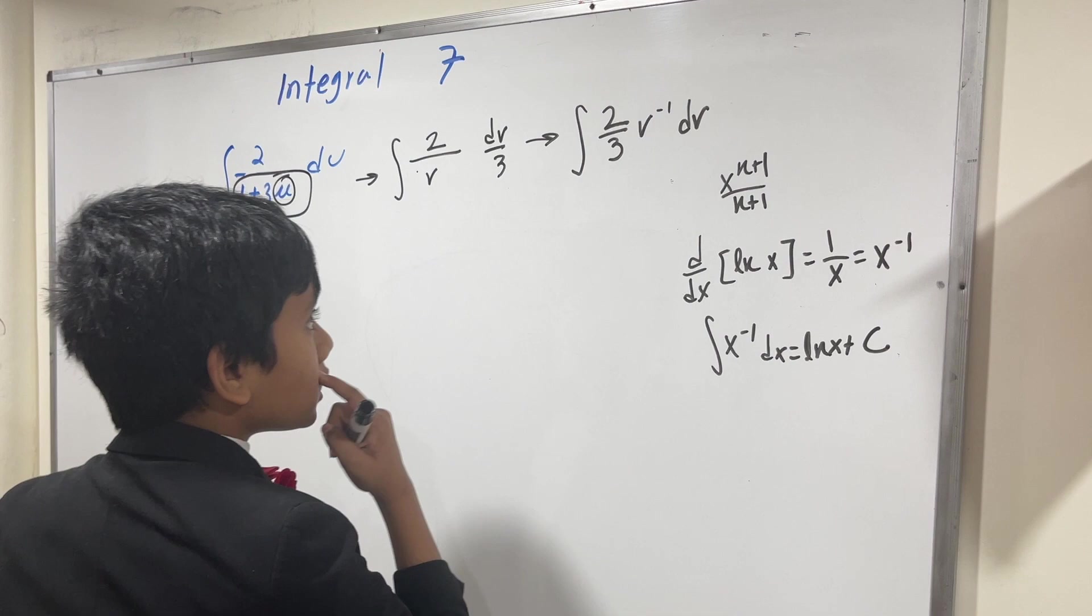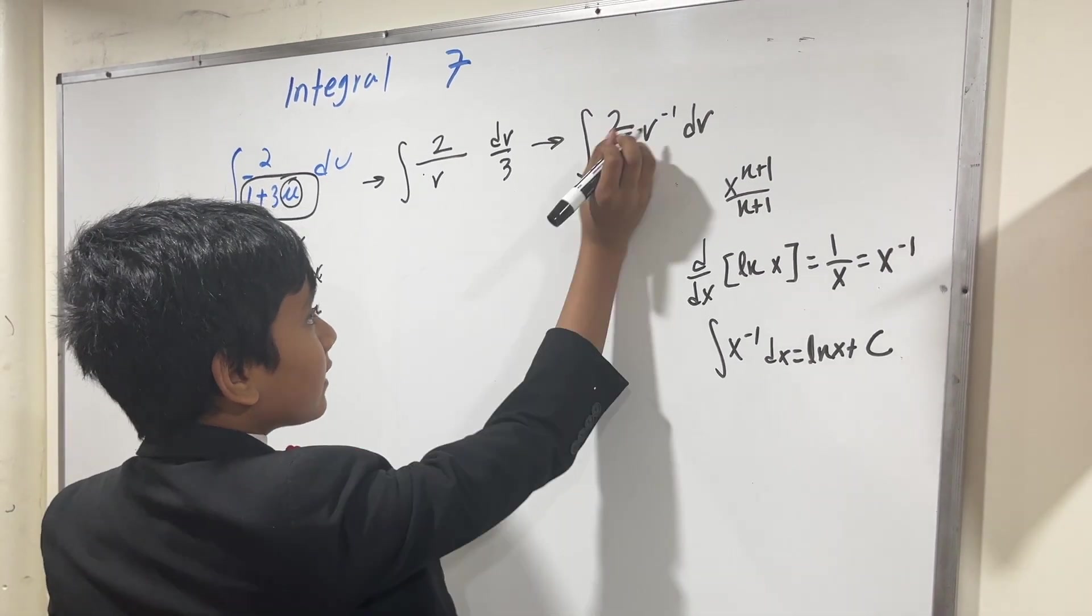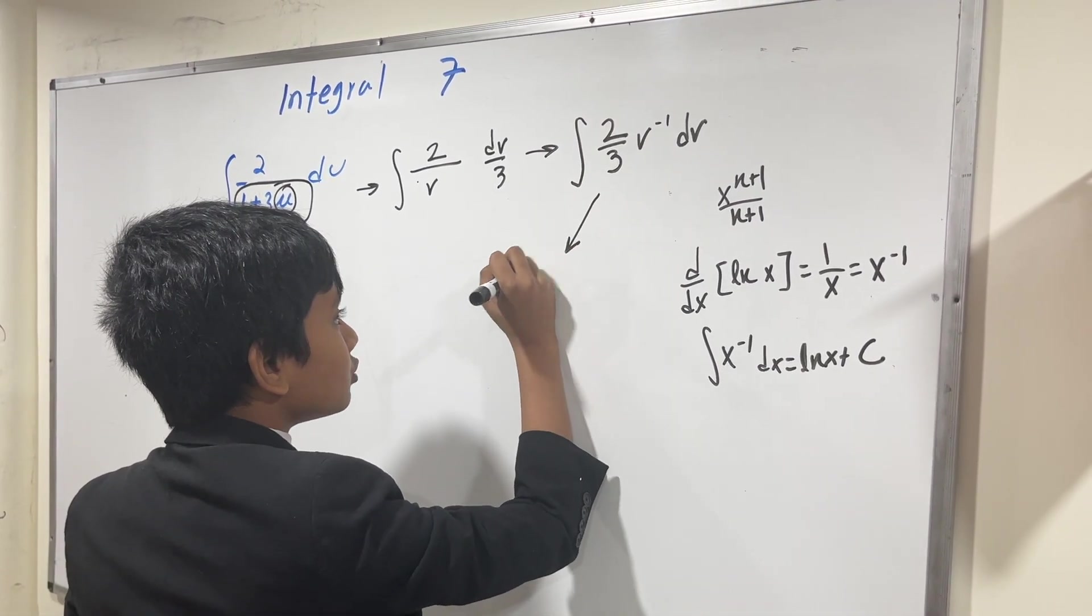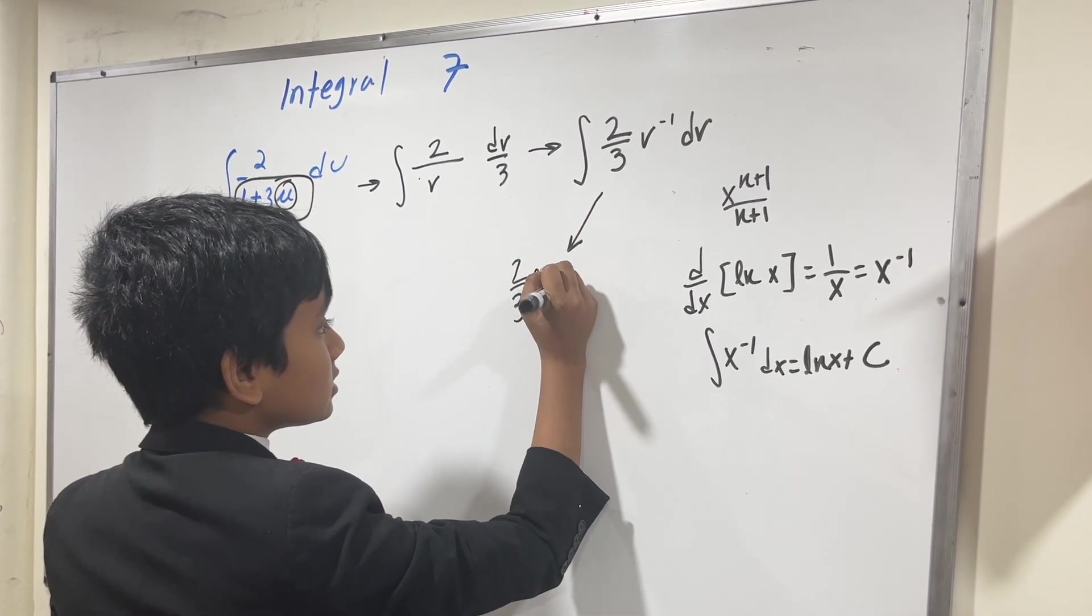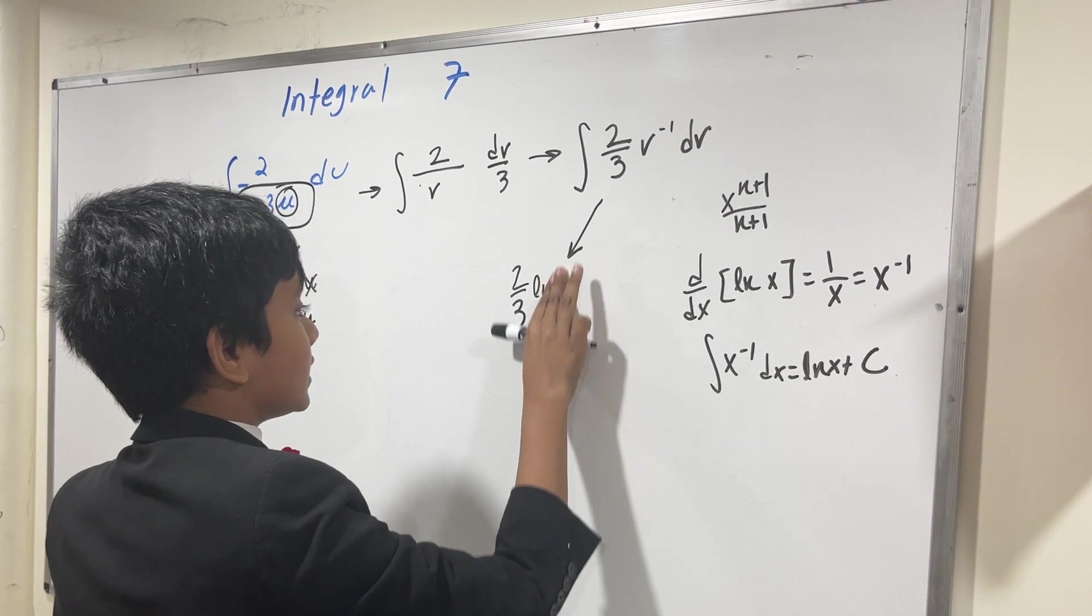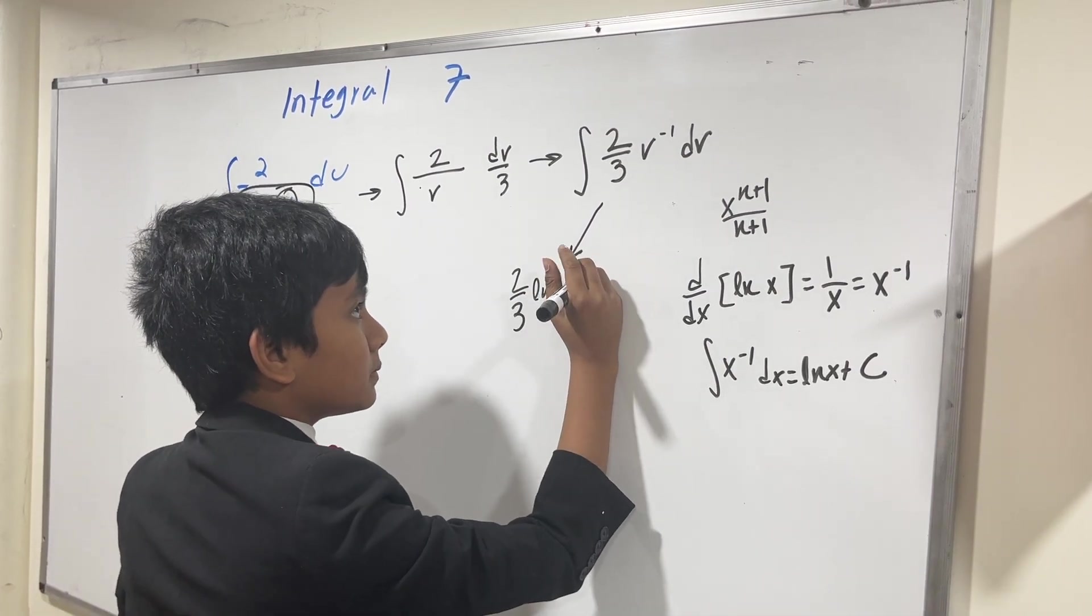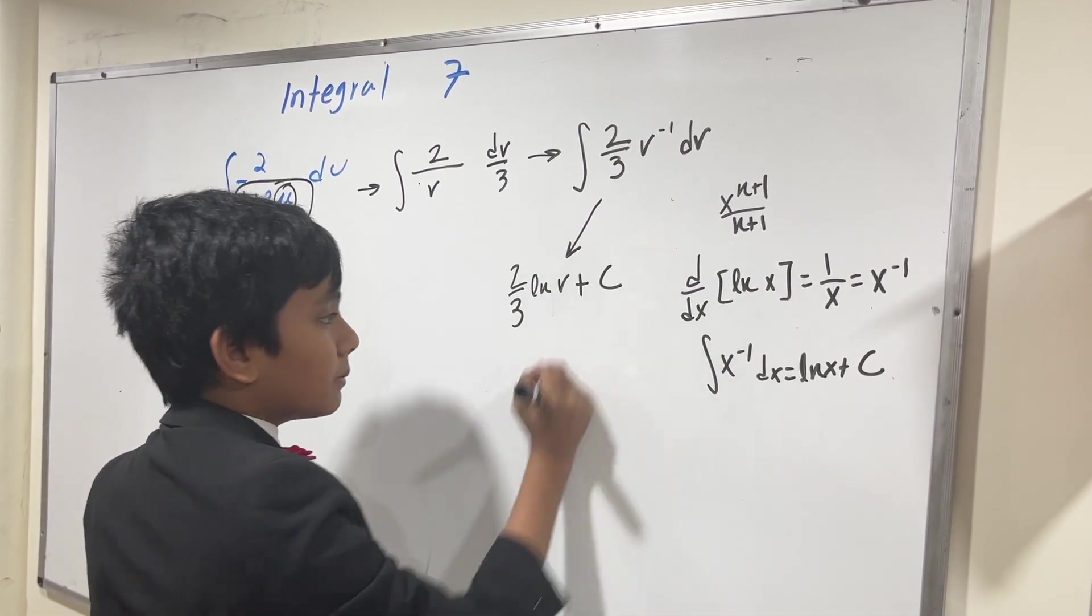So that means that in this case, taking the constant out, that becomes 2 over 3 times ln x, or rather v in this scenario, plus c. But the thing is, v is a polynomial.